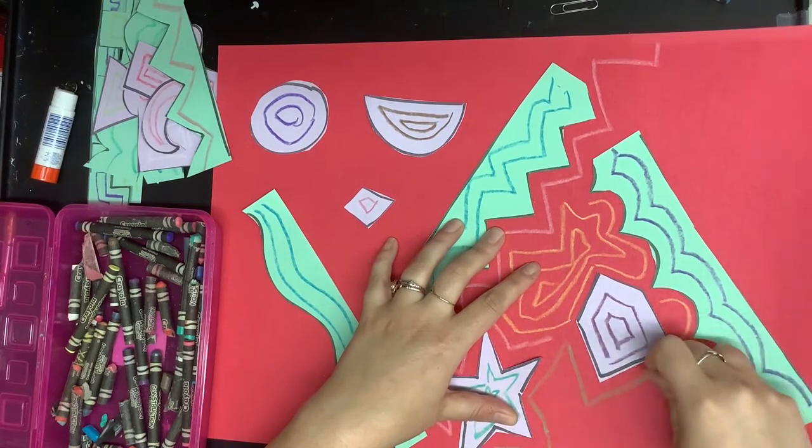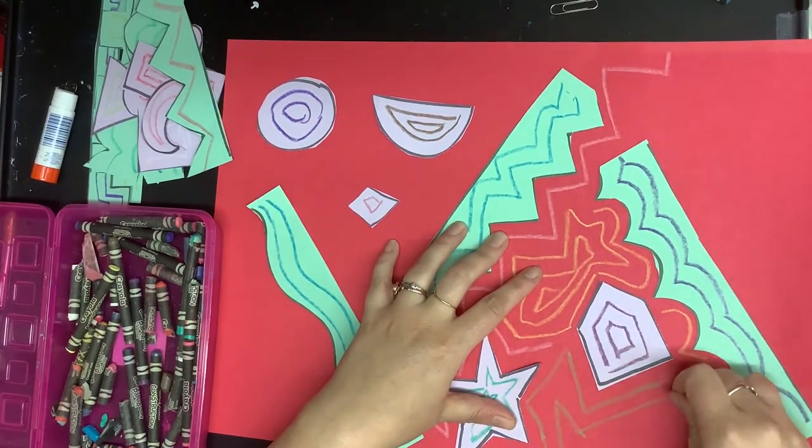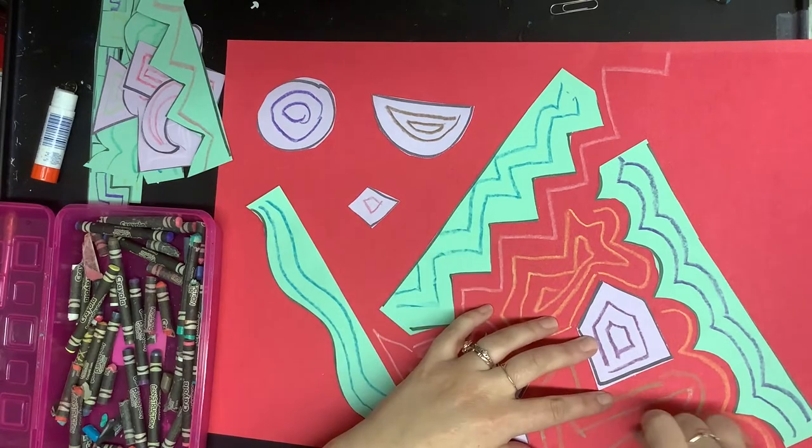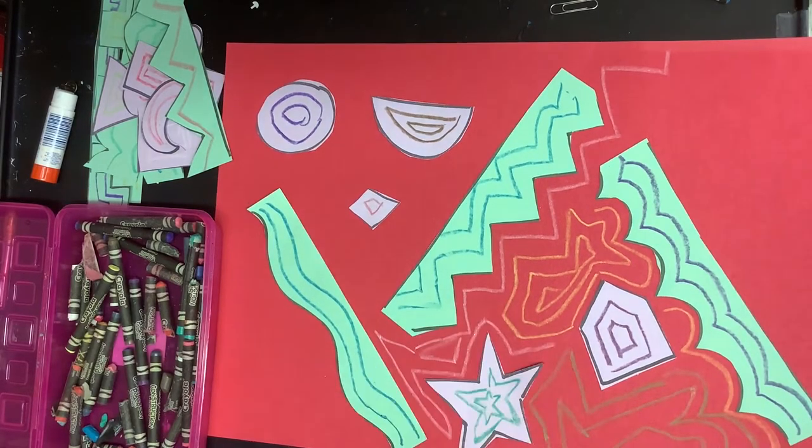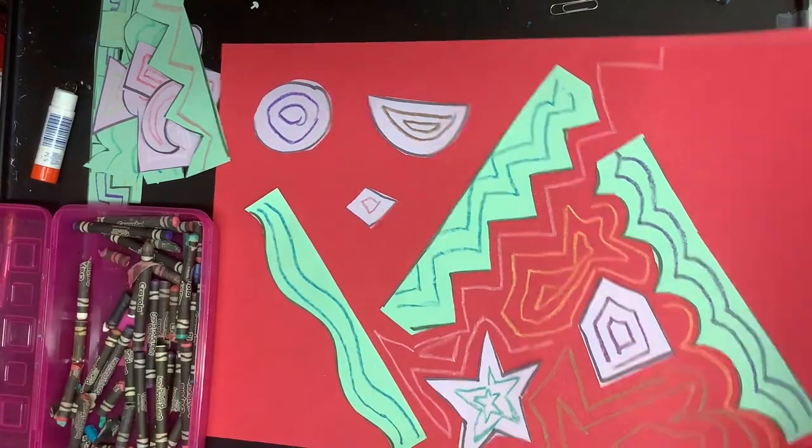But you can see I'm just going around just like I did with the lines and the shapes and I'm just outlining the edges of all of the pieces that I glued down to create some interesting lines in the middle of my paper.